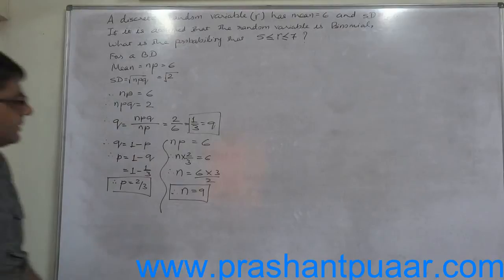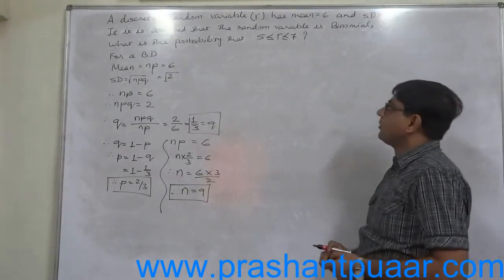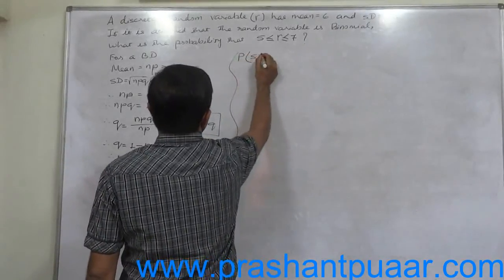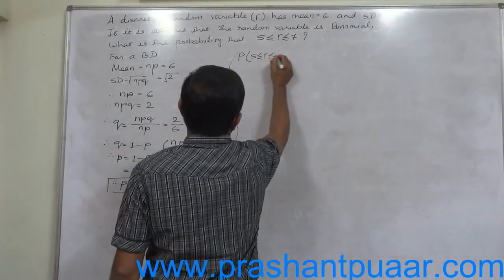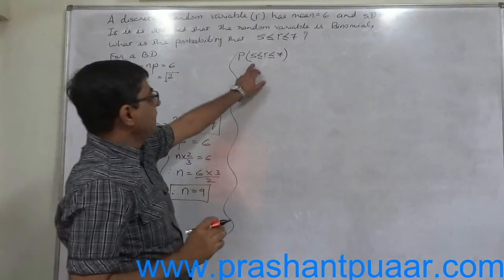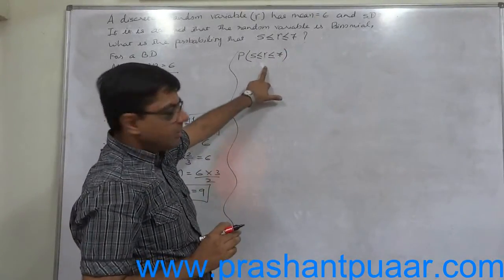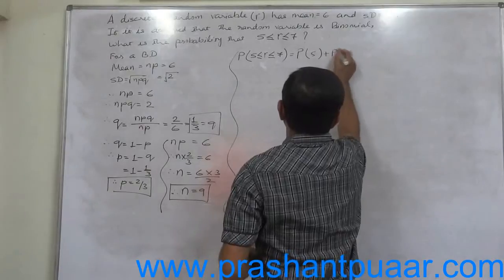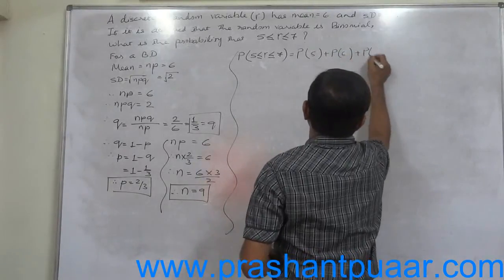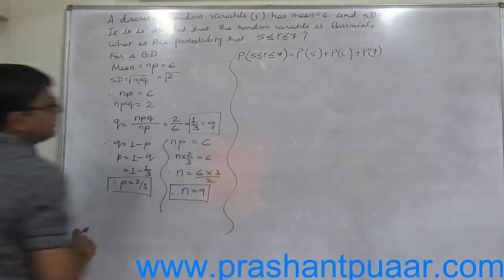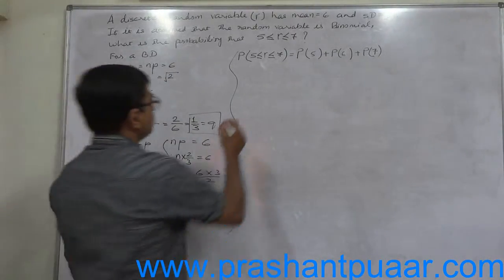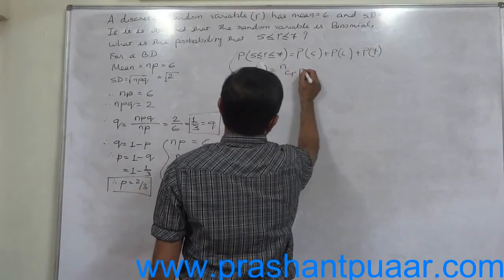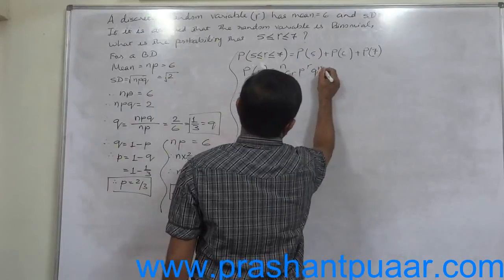Now we can calculate probability of r being 5 or 6 or 7, because probability of 5 ≤ r ≤ 7 means r is either 5 or more, but at the same time it is 7 or less. So r is either 5, 6, or 7. So we require to calculate probability of these 3 values. Probability of r successes equals nCr times p^r times q^(n-r).